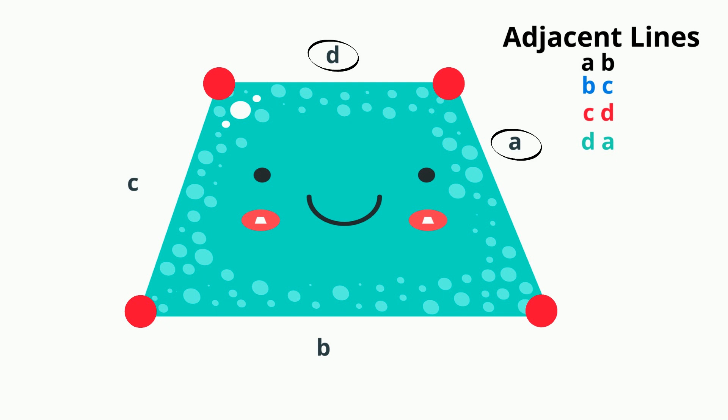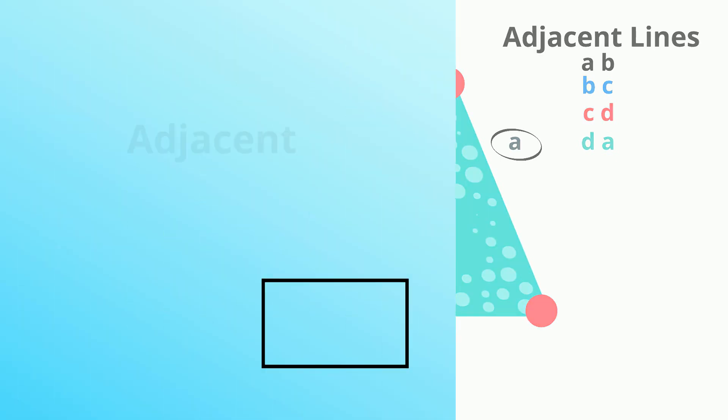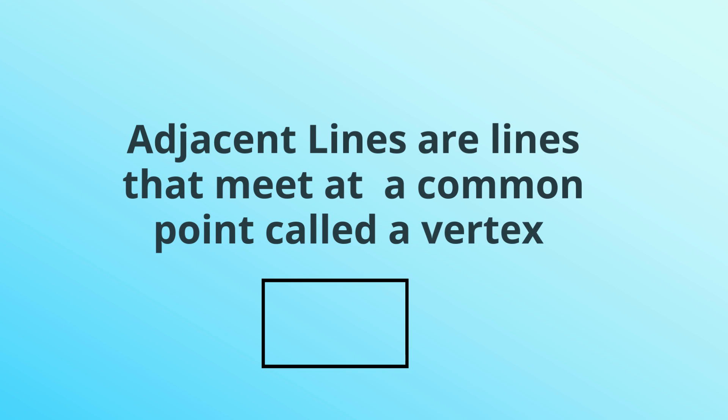So in summary, adjacent lines are lines that meet at a common point called a vertex. I hope this helps and thanks for watching.